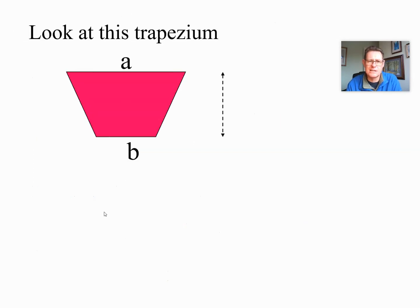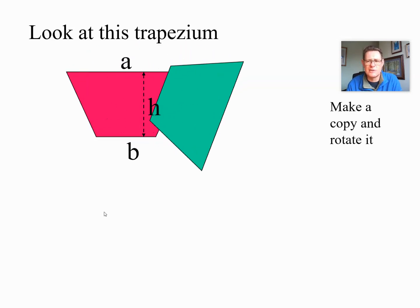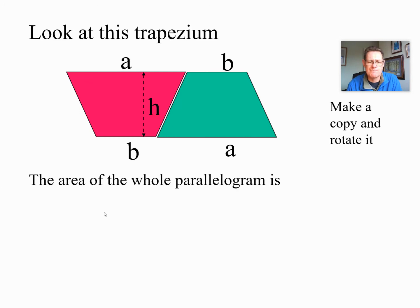So let's have a look at this trapezium. There are the three letters we've used. What we're going to do is we're going to make a copy, rotate it and stick it next to it. So the A jumps down to the bottom and the B jumps up to the top. Now if you look closely you'll see that this is the same as a parallelogram. And we've just talked about areas of parallelograms.